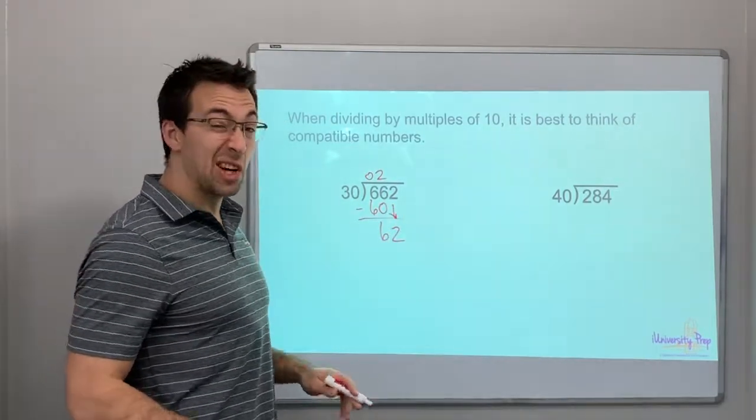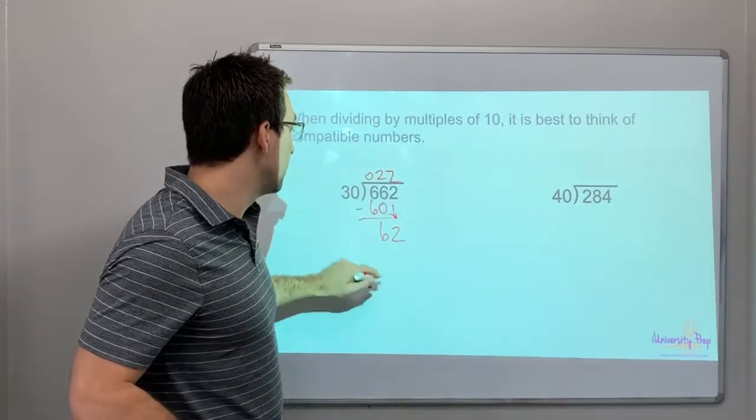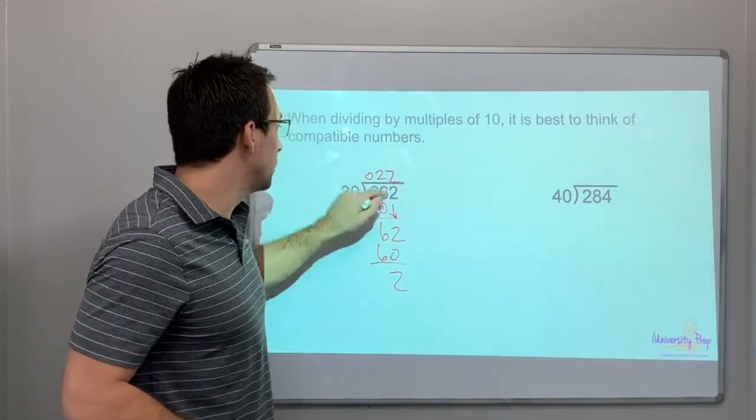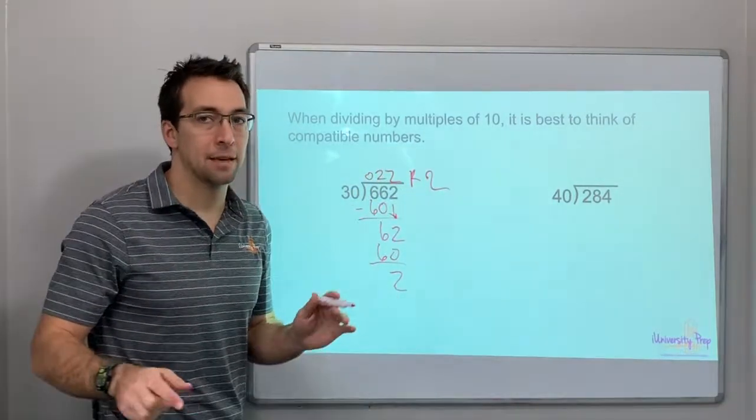30 goes into 62, 2 times. 2 times 30 is 60. So 2. 22 remainder 2. That simple.